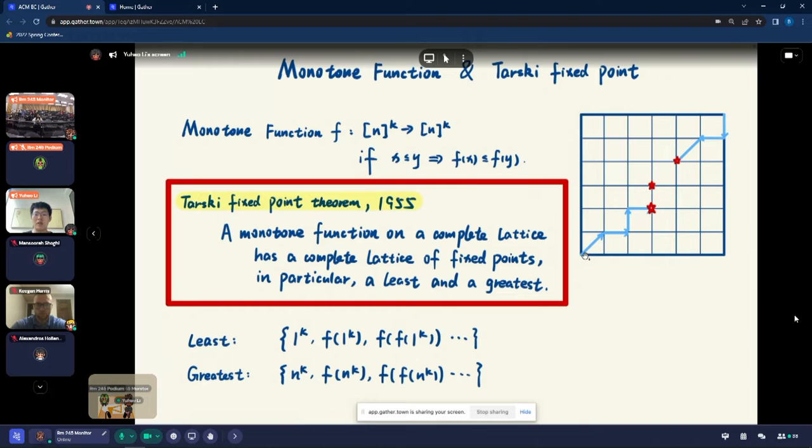Otherwise, we take F of 1 to the k, which is, for example, this arrow. Because of monotonicity, if we follow this path, then this path must be a monotone path. Since there are only finite number of points, this path must eventually get to a fixed point. It can be quickly verified that this is the least fixed point. Similarly, we can start from the greatest point n to the k to define the path and follow the path. The corresponding point will be a greatest fixed point. As you can see, there could be multiple fixed points. Except this greatest and this least, there could be other fixed points here.